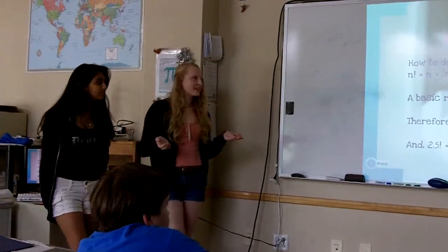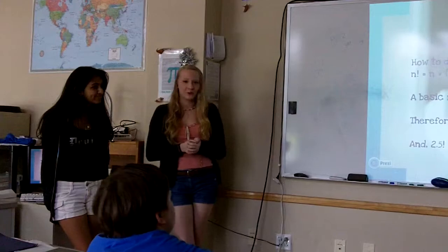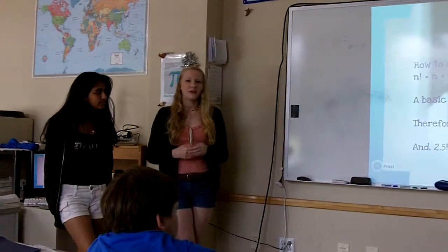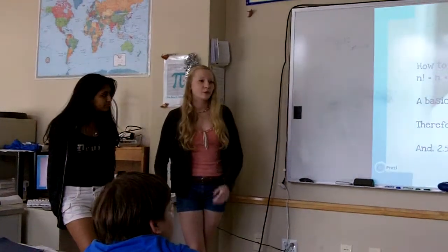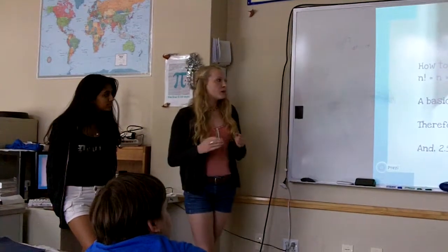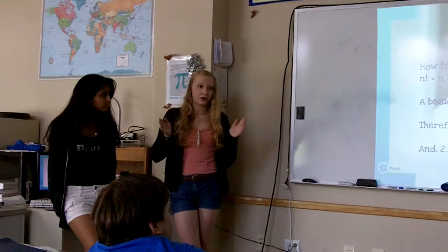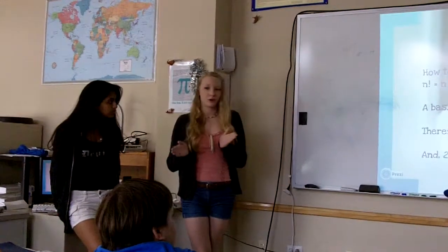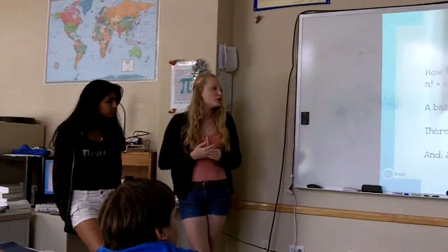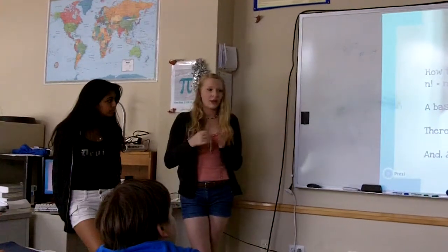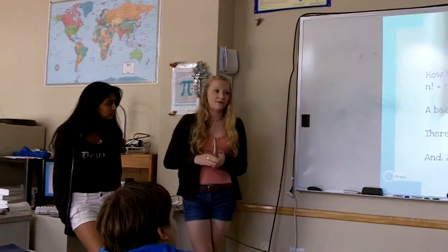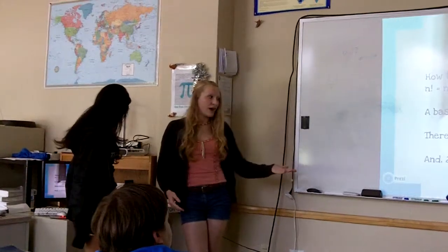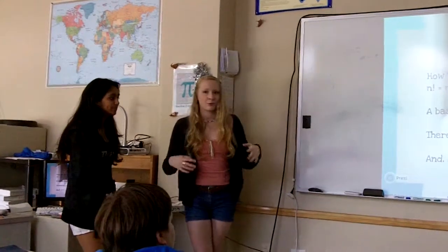Something that's very complicated, not really, is how to do a half factorial. A whole number like 4 factorial would be 4 times 3 times 2 times 1. However, if you have a number like 1.5 or 2.5, how would you do that? A simple rule is that 0.5 factorial is equal to 0.5 times the square root of pi. So if you have 1.5, you would minus 1, and then it would be 0.5. So it would be 1.5 times 0.5 times the square root of pi, and that would equal 1.5 factorial. Similarly, with 2.5, it's 2.5 times 1.5 times 0.5 square root of pi. Works with all half factors.